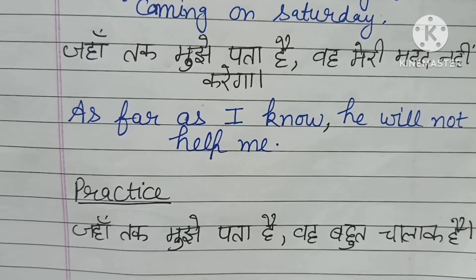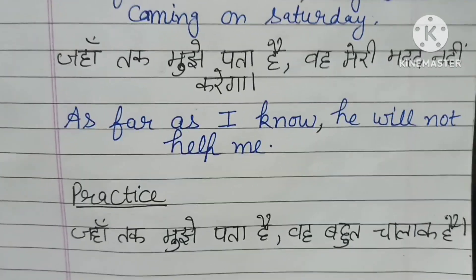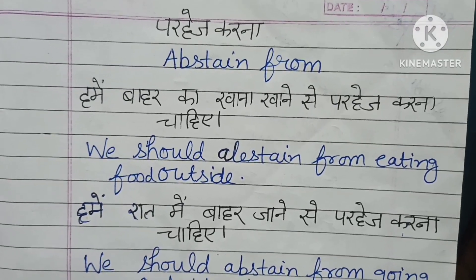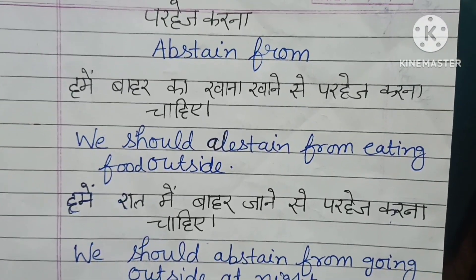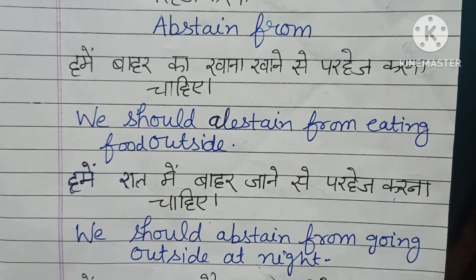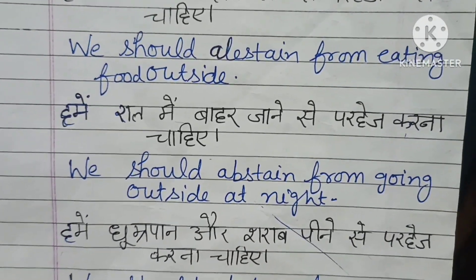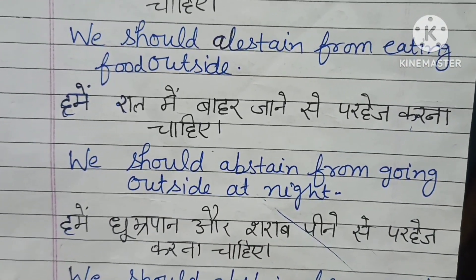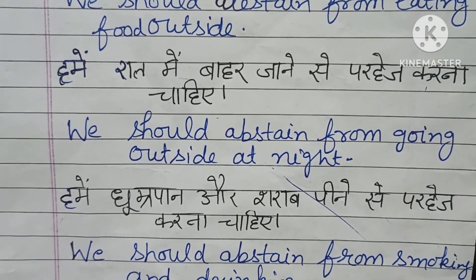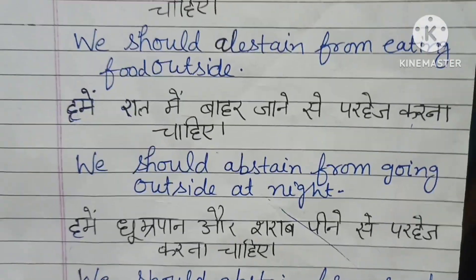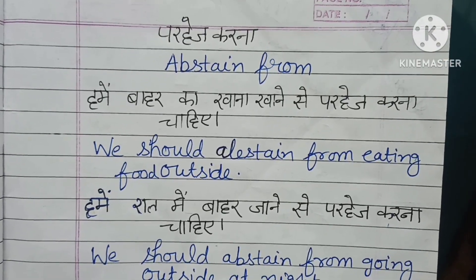One more structure: 'parhej karna.' Sentences like 'hame bhaar ke khane se parhej karna chahiye,' 'hame raat me bhaar jane se parhej karna chahiye,' and 'hame dhumrapan aur sharaab peene se parhej karna chahiye' — for these we use 'we should abstain from.'